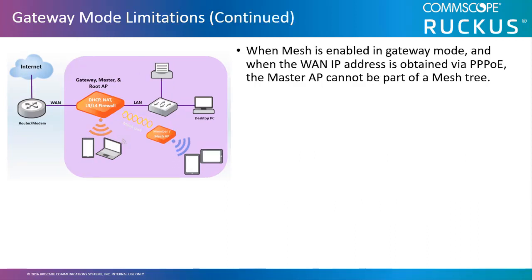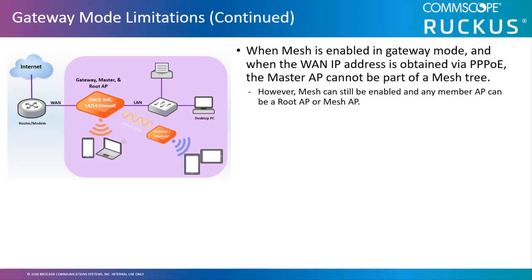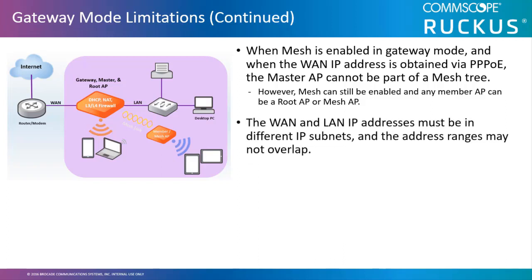When Mesh is enabled in the gateway mode, and when the WAN IP address is obtained via point-to-point protocol over Ethernet or PPPoE, the master AP cannot be part of the Mesh tree. However, Mesh can still be enabled and any member AP can be a root AP or Mesh AP. The WAN and LAN IP addresses must be in different IP subnets, and the address ranges may not overlap.